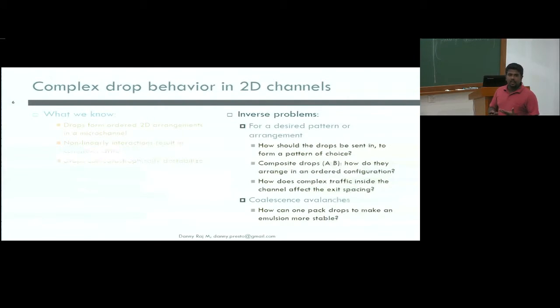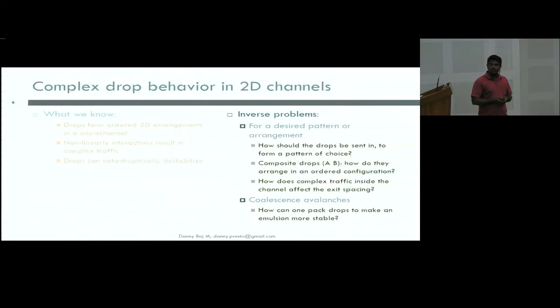What we know is that drops form 2D arrangements in channels. There are nonlinear interactions between drops that result in a lot of interesting complex traffic. And drops can catastrophically destabilize as they flow in the channel. From an engineering perspective, there are a lot of inverse problems that we are interested in. If I want a certain pattern of choice, how should I send drops in? Or if I have two different drops, how will they arrange themselves in an assembly of drops? And what does the complex traffic have to do with the way drops enter or exit? And how do you pack drops to either make the emulsion more stable or destabilize it?